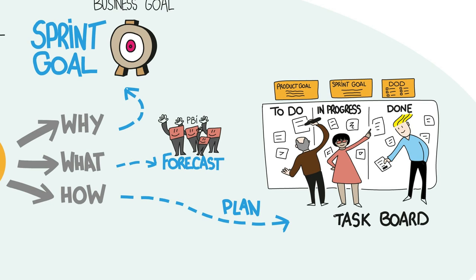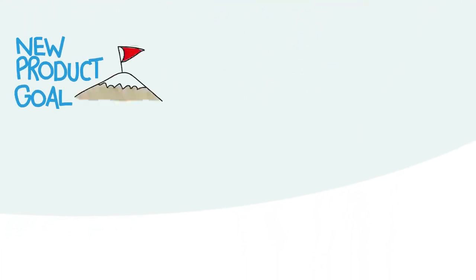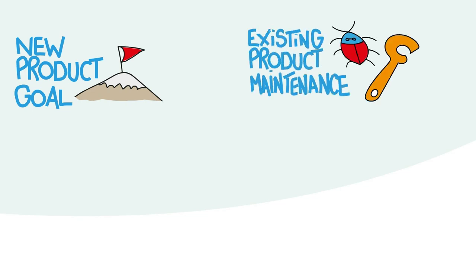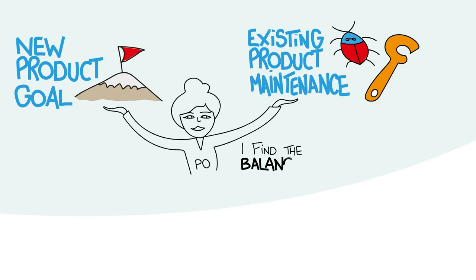Those decisions are taken by the developers in the daily scrum. What if your team has work to do that doesn't support the current product goal? While existing products sometimes need maintenance, constantly changing priorities slow you down and can even put your investment at risk. The product owner is accountable for finding the right balance.